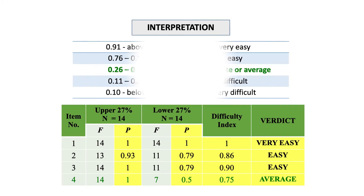Use the given interpretation table to make sense of the difficulty index value. If you obtain a difficulty index of 0.10 and below, the item is very difficult. If it ranges from 0.11 to 0.25, the item is difficult. If it ranges from 0.26 to 0.75, the item is moderate or average. If it ranges from 0.76 to 0.90, the item is easy. And if it ranges from 0.91 and above, the item is very easy.